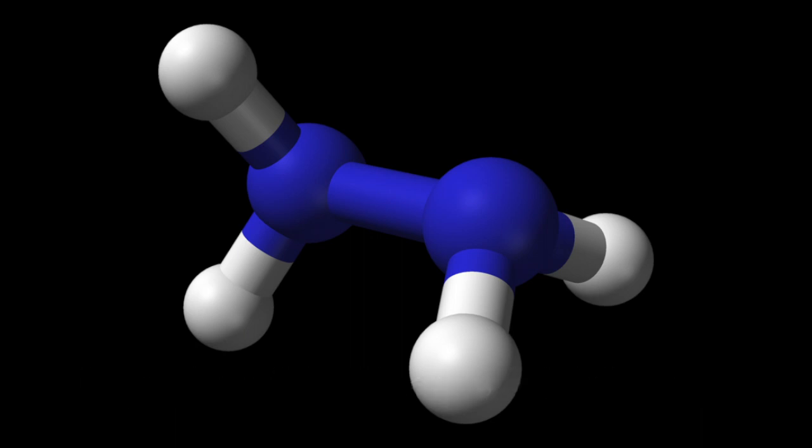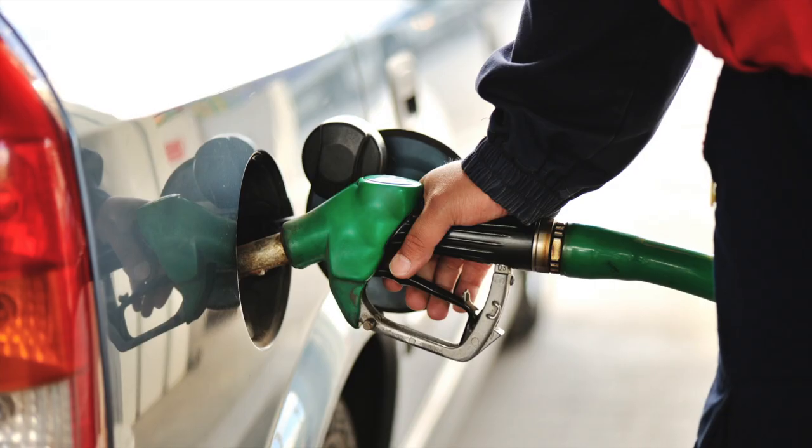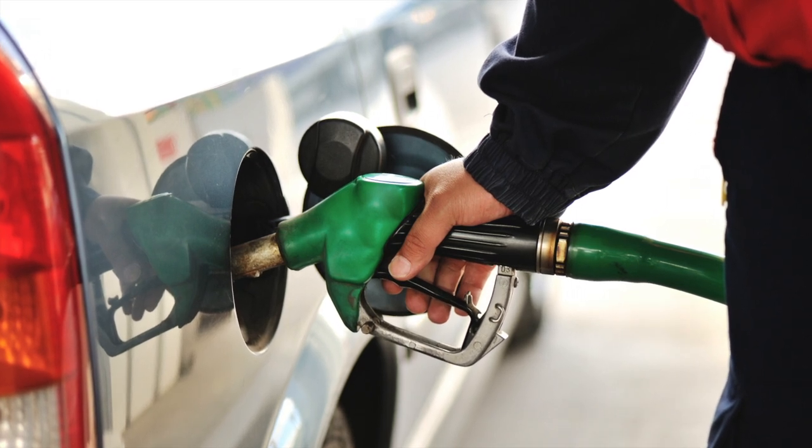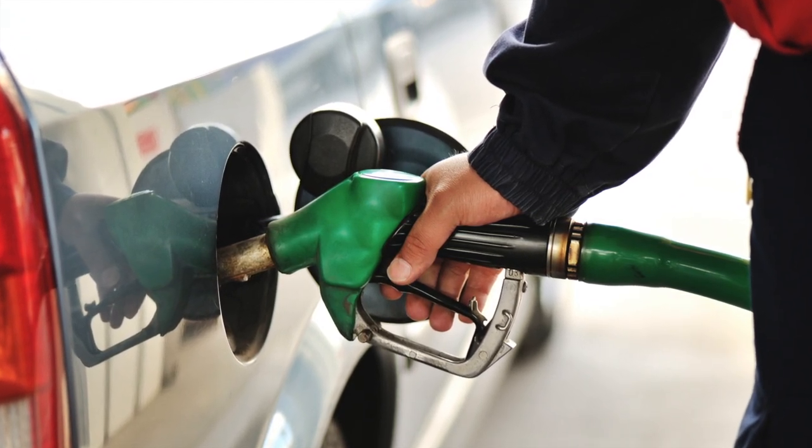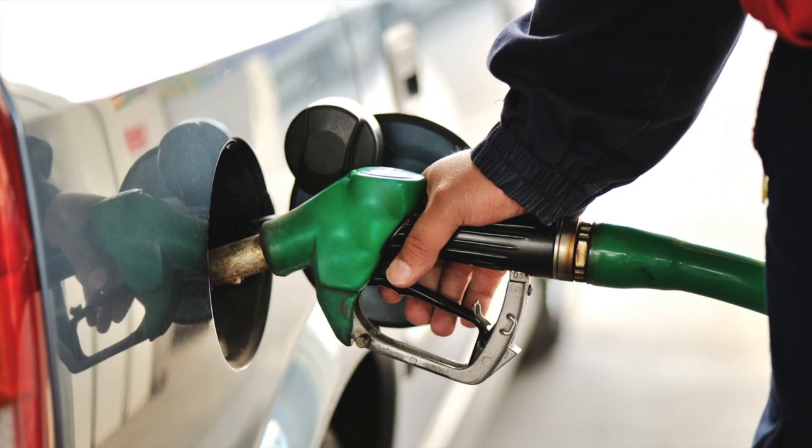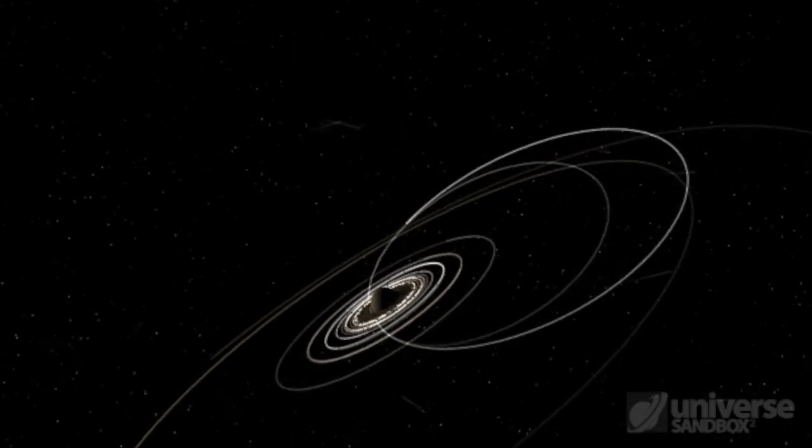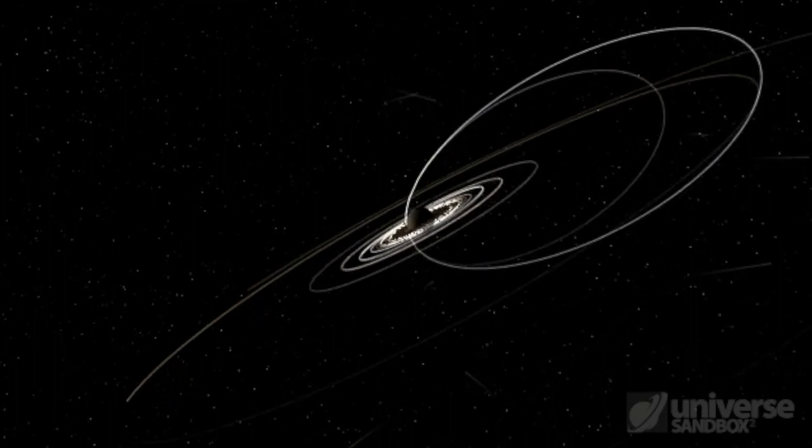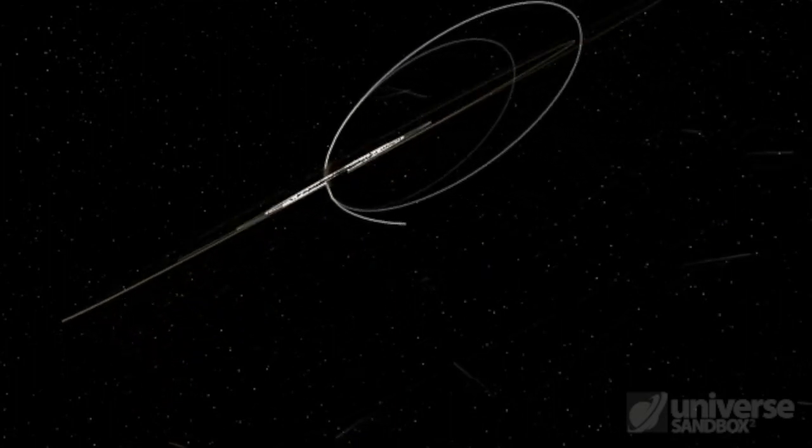At the time of Cassini's grand finale, fuel levels reached around 1%, plus or minus 2%, so they had very little fuel left at all. But let's say for this video, NASA had miscalculated the spacecraft's orbital position during its grand finale, and Cassini missed colliding with Saturn.